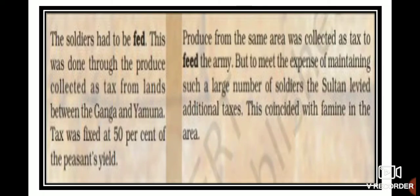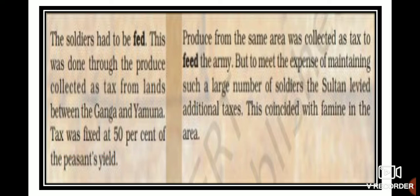The soldiers had to be fed. For Alauddin Khilji, this was done through the produce collected as tax from lands between the Ganga and Yamuna. The tax was fixed at up to 50 percent of the peasant's yield. There were huge lands and abundant agriculture in that area, so a large amount of food was available.